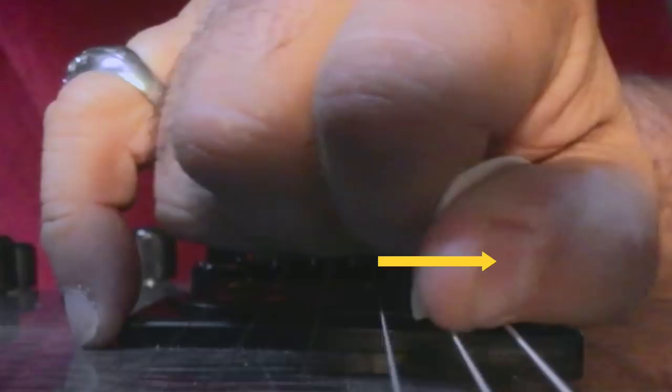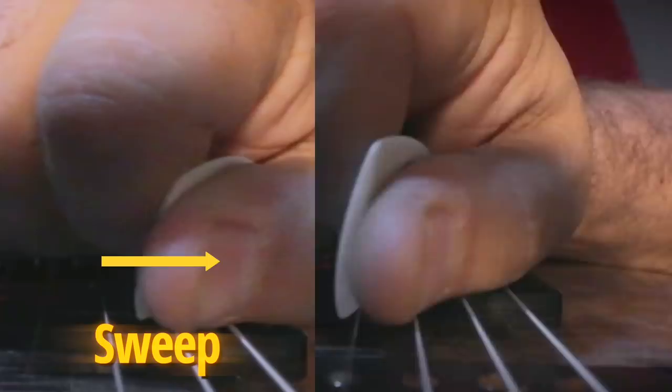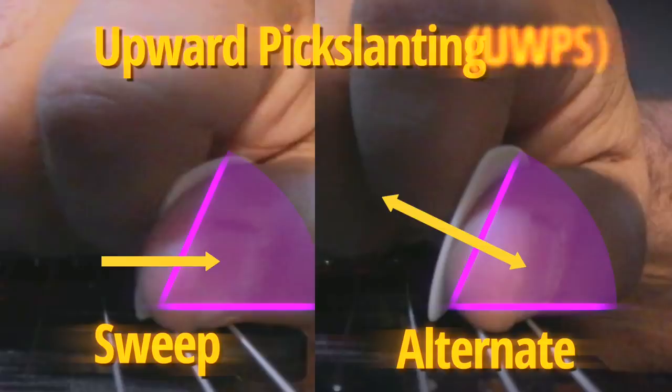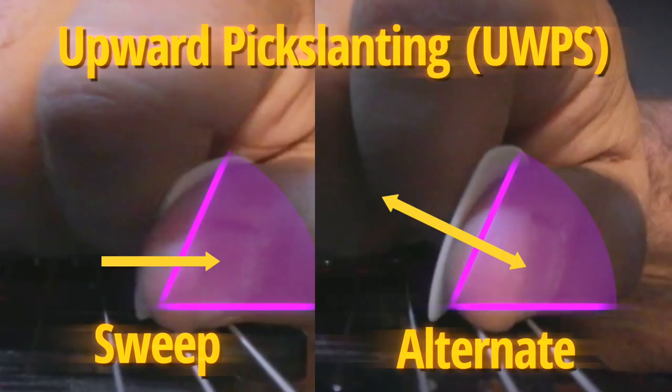And this motorcycle leaning turns out to be a critically important aspect of Frank's mechanics. Because when you look at Frank's upstroke sweeping motion and his DSX alternate picking motion, we discover they both use the same pick slant. In this case, it's the upward pick slant, or UWPS for short. This coincidence is what allows these two motions to be connected together inside the same phrase at high speed with no loss of efficiency.